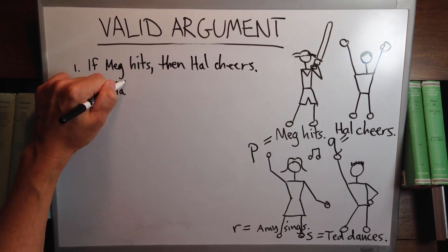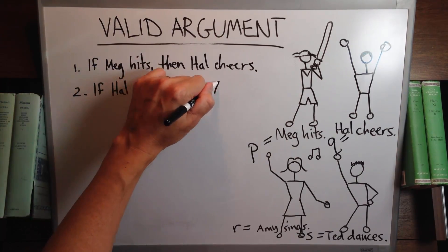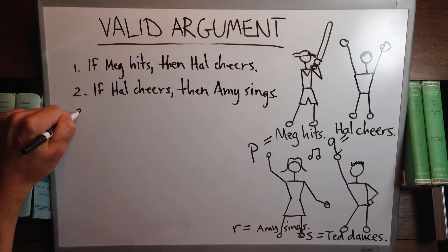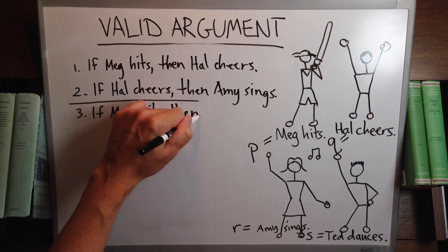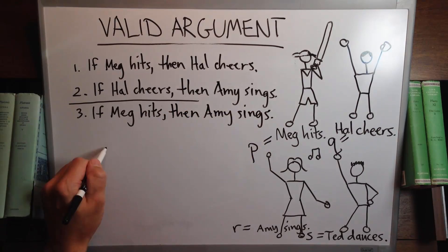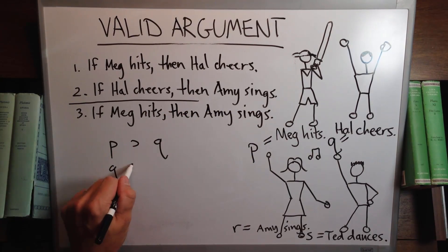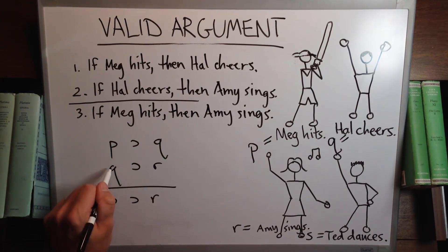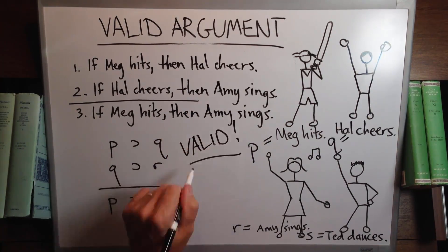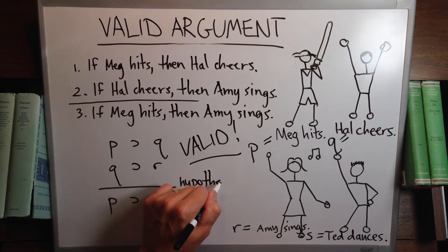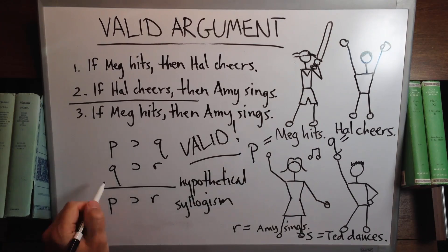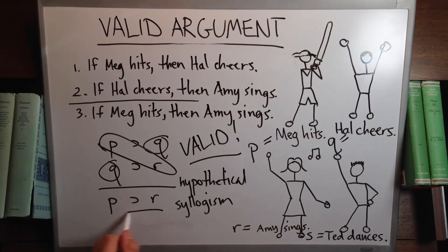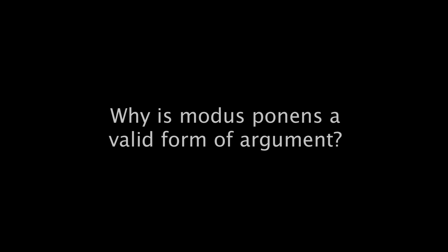Last one: if Meg hits then Hal cheers; if Hal cheers then Amy sings; and then we infer if Meg hits then Amy sings. The form is: if P then Q; if Q then R; therefore if P then R. It's a valid form called a hypothetical syllogism. P is sufficient for Q, Q is sufficient for R, so P is sufficient for R.